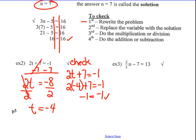Example number 3: two-thirds times n minus 7 equals 13. I have subtract and multiply. I'm going to do the opposite of the subtraction first, which is adding 7 to both sides. Negative 7 and positive 7 are opposites — they cancel to 0. So I bring down what I haven't worked on, which is the multiplying. On the right side, I have 13 plus 7, which equals 20.